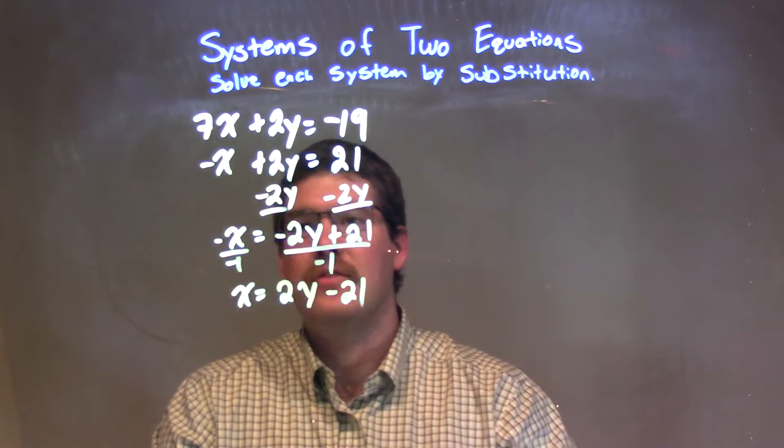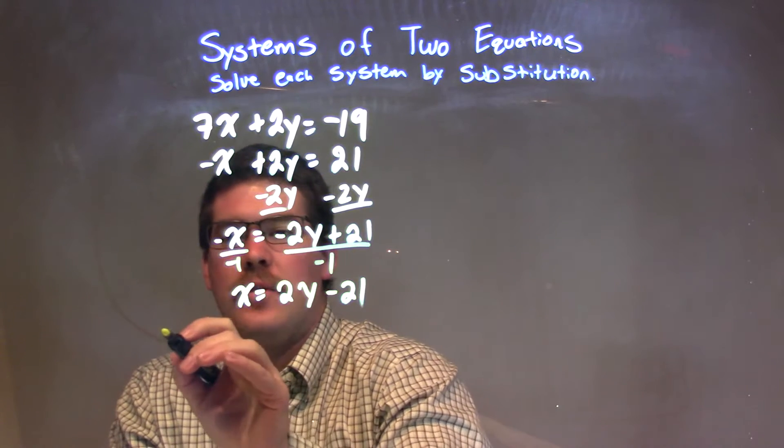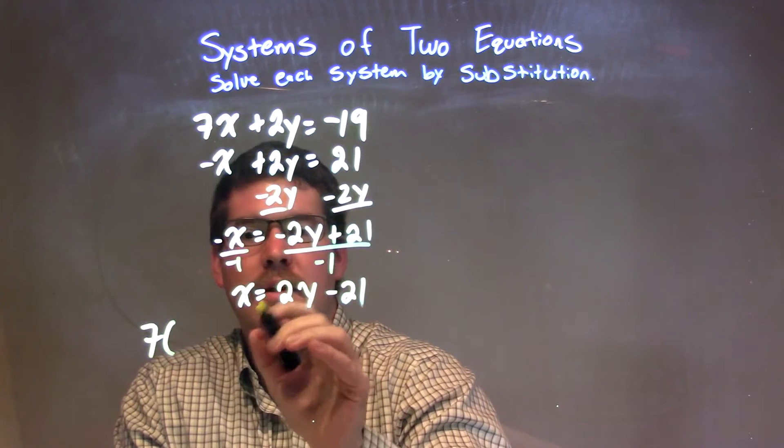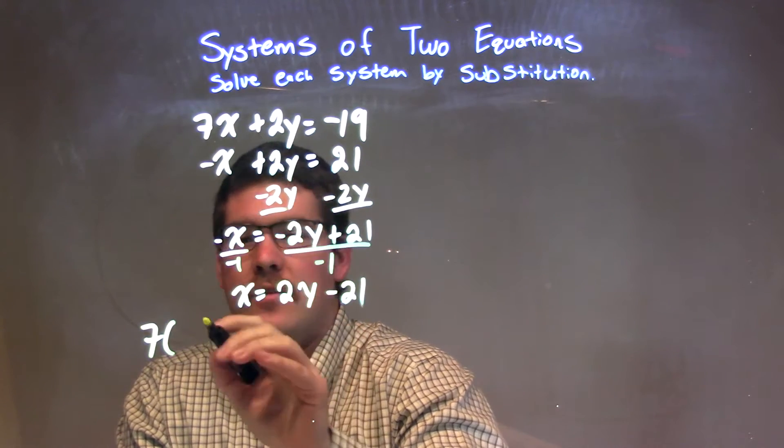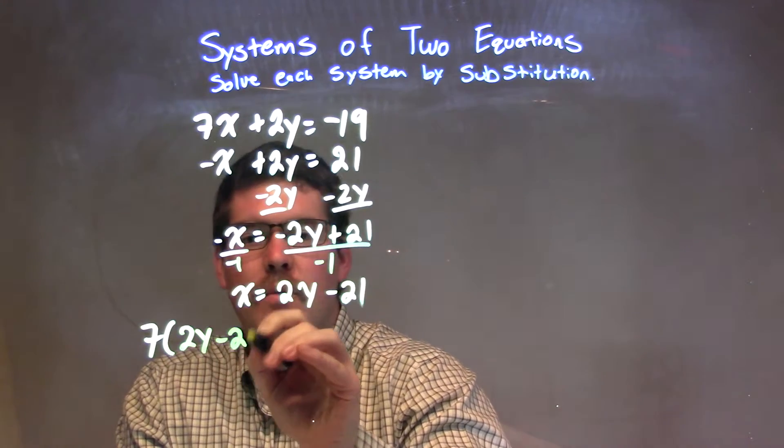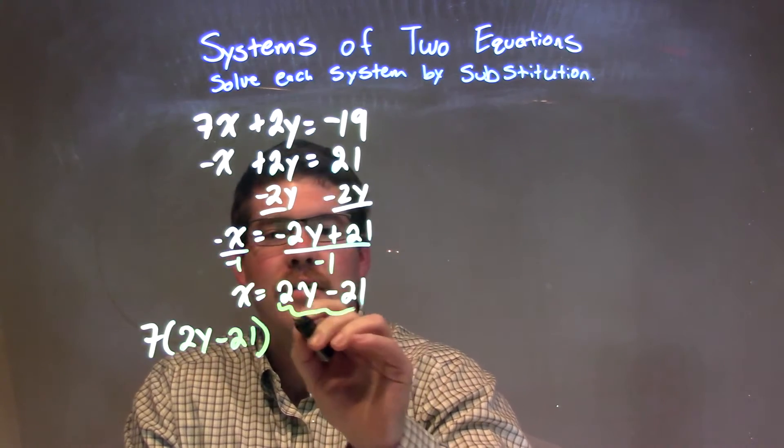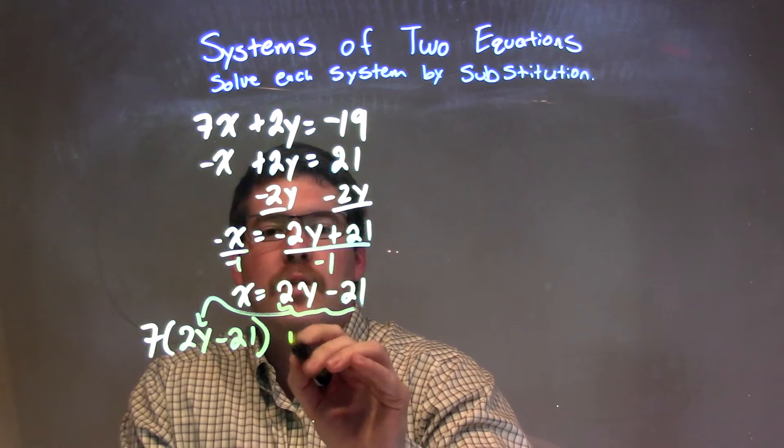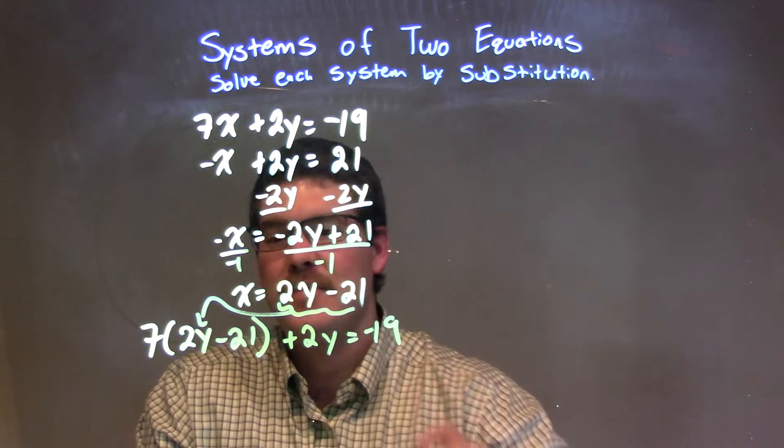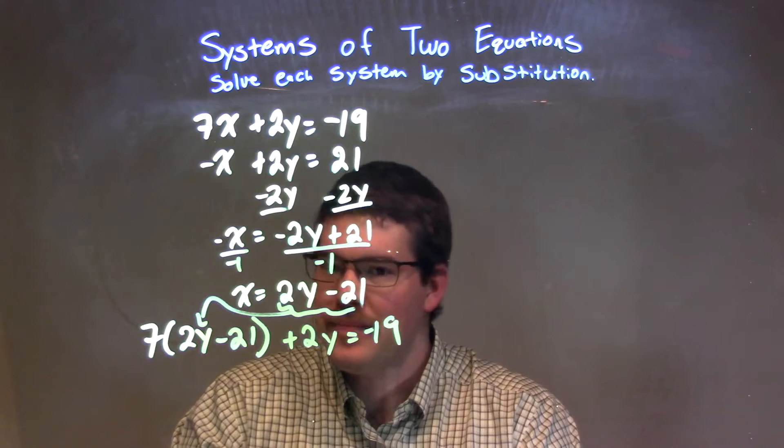Well, x is isolated, so now I'm going to put that into my first equation. So we have 7 times, and instead of x, I'm going to put this 2y minus 21 in. All right, so that's going right there, plus 2y equals negative 19. Well, now I've got to simplify this.